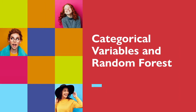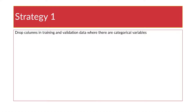Hi, this lecture is about categorical variables and random forest. Strategy one is that we drop columns in the training and validation data where there are categorical variables.